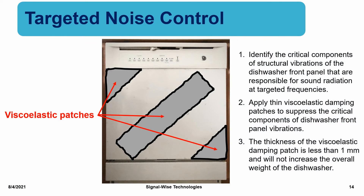Once the most critical components of structural vibrations are identified, we can use viscoelastic patches to suppress these critical structural vibrations and leave the rest intact. Viscoelastic patches are typically very thin. For example, Shiloh's acoustic patches are easy to apply and their thickness can be less than 1 mm. Therefore, they will not increase the overall weight of the structure. Note that the overall structural weight can be critical in the aerospace and automobile industries.